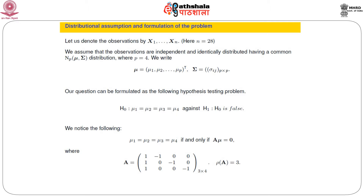Therefore, the μᵢ's are all the same if and only if Aμ = 0. The three rows of capital A are all linearly independent, so the rank of A is 3. Given a multivariate normal sample of IID observations, if we pre-multiply mu by a full row rank matrix A, we can test Aμ = 0, or more generally, Aμ = a given vector B, where Aμ = B is a consistent system. This is what the next part of our discussion will revolve around.